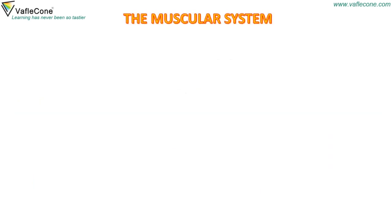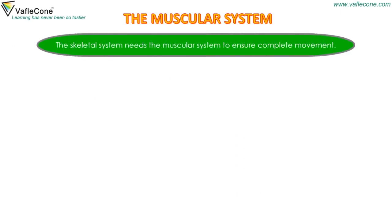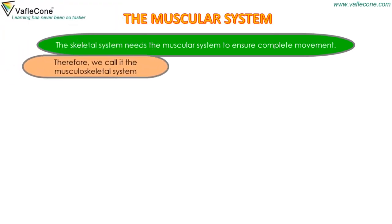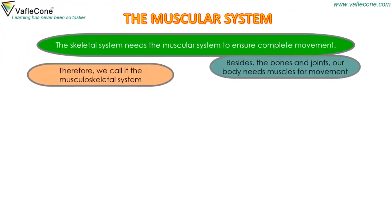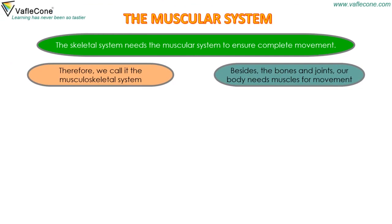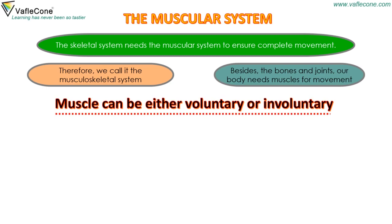The Muscular System. The skeletal system needs the muscular system to ensure complete movement; therefore, we call it the musculoskeletal system. Besides the bones and joints, our body needs muscles for movement. Muscles can be either voluntary or involuntary.